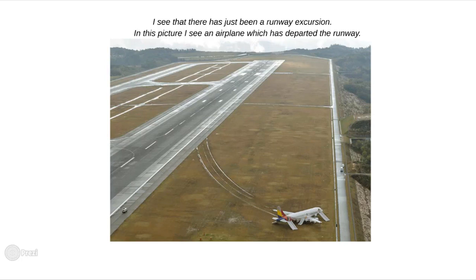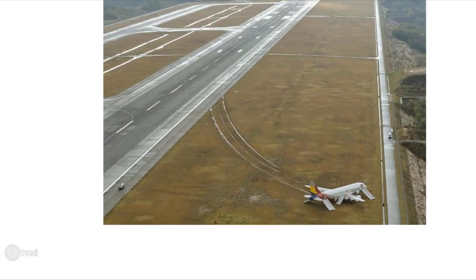Then we will go on to describe the picture in more detail. It would be smart to start from the most significant things, like for example the position of the aircraft. Perhaps you could say that it's on the grass and not on the tarmac, and you could name the approximate distance from the paved surface. You don't have to be super precise — just make a guess. Another important thing is the actual condition of the aircraft.